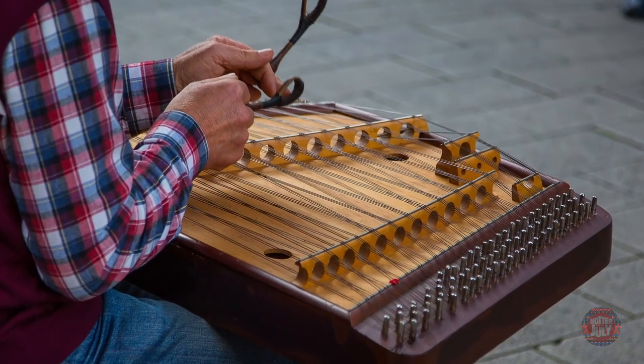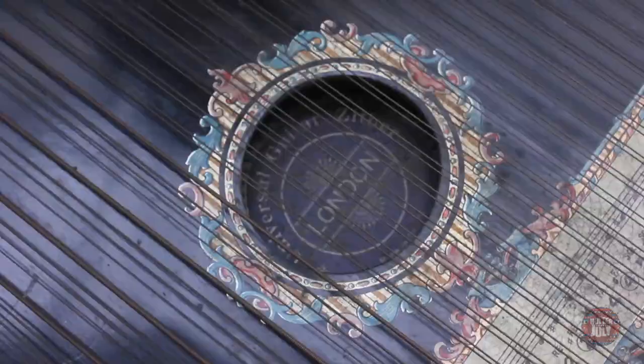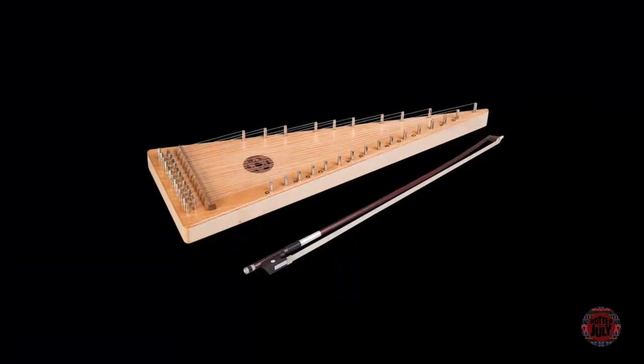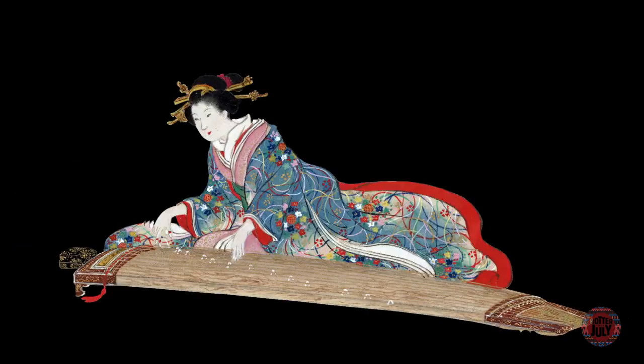Zithers are a family of instruments whose strings are stretched across a typically hollow body. Examples of zithers are psaltery, dulcimers, auto harp, zhang and koto.